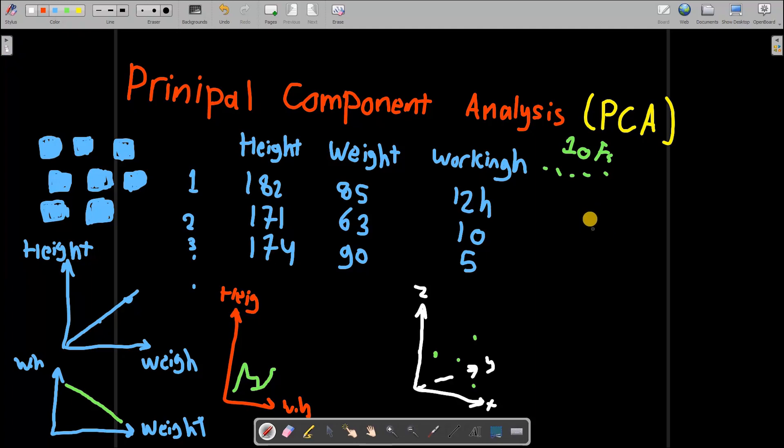So this is why this is not really practical. And what we resort to is by creating a principal component analysis graph. It looks like this. We call this, let's say, component one, principal component one.